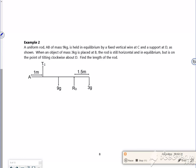An object of mass 3kg is placed at B. The rod is still horizontal in equilibrium but it's on the point of tilting around D.